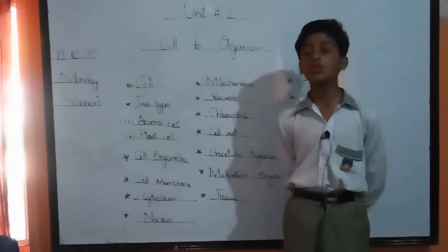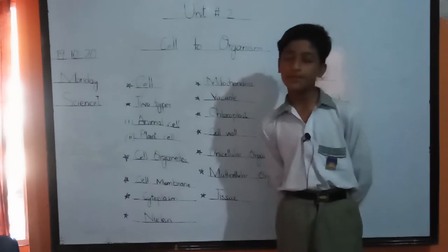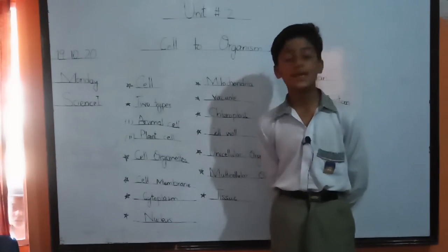Multicellular organism. Those organisms which are made up of many cells are called multicellular organisms. Like human beings, animals and plants. Human beings are made up of many cells.